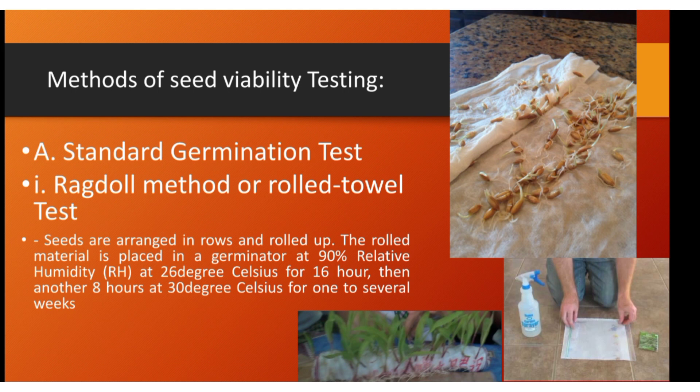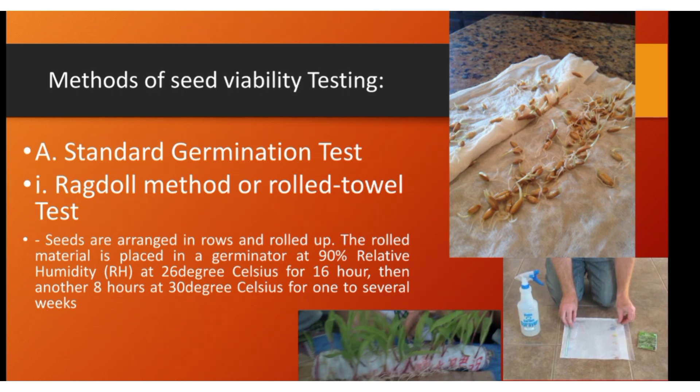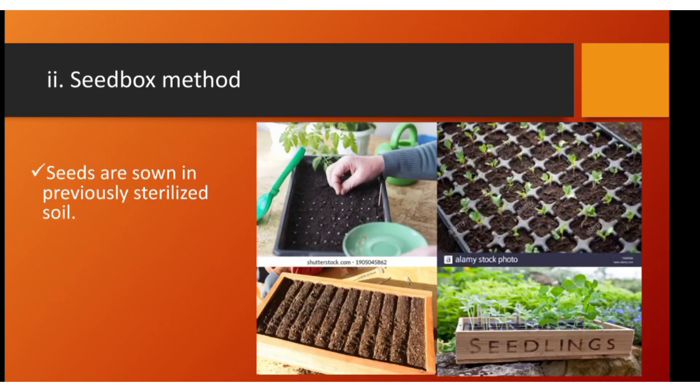The seeds are arranged in rows and rolled up. The rolled material is placed in a germinator at 90% relative humidity. If you do not use a germinator, you can place it in a low-light or cool area of your house or laboratory. Maintain 26 degrees Celsius for 16 hours, then 30 degrees Celsius for another 8 hours, for one to several weeks for germination.